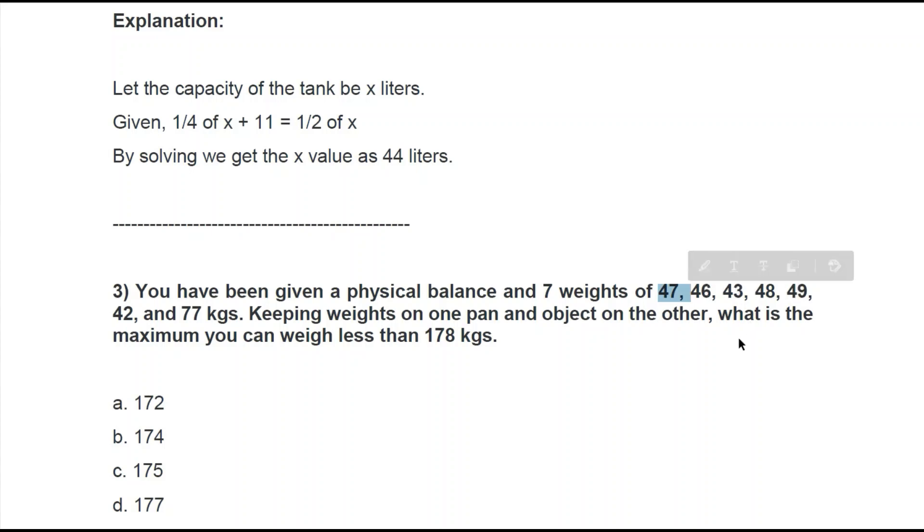My first approach would be to add up the maximum weights we have. The top ones can be 77, 48, and 49 kgs. Let's also take 47. This sums up to above 178. We need it to be less than 178, so let's add the top three.